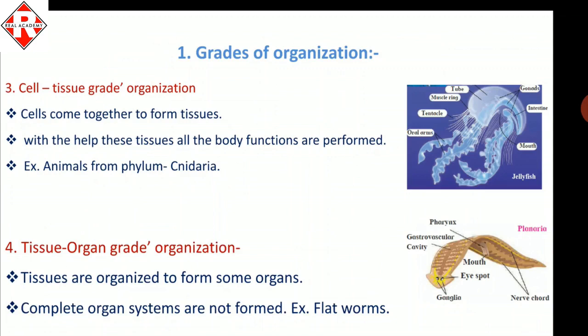The third type is cell-tissue grade organization. Cells come together to form a tissue, and with the help of this tissue all body functions can be performed, but organs are not formed — only tissues. Animals from phylum Cnidaria are examples of this cell-tissue grade organization.